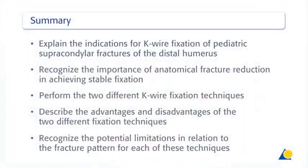You should now be able to explain the indications for K-wire fixation of pediatric supracondylar fractures of the distal humerus, recognize the importance of anatomical fracture reduction in achieving stable fixation, perform the two different K-wire fixation techniques, describe the advantages and disadvantages of the two fixation techniques, and recognize the potential limitations with both techniques in relation to the fracture pattern.